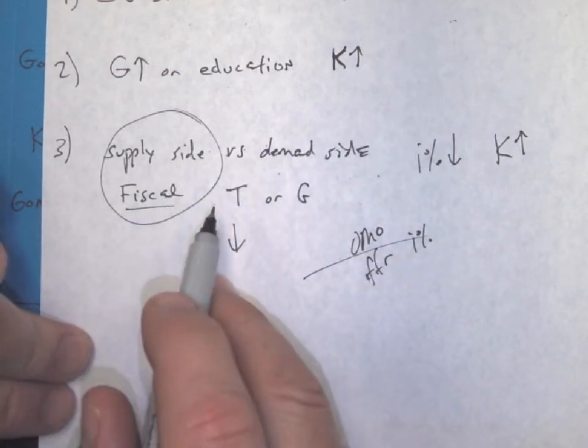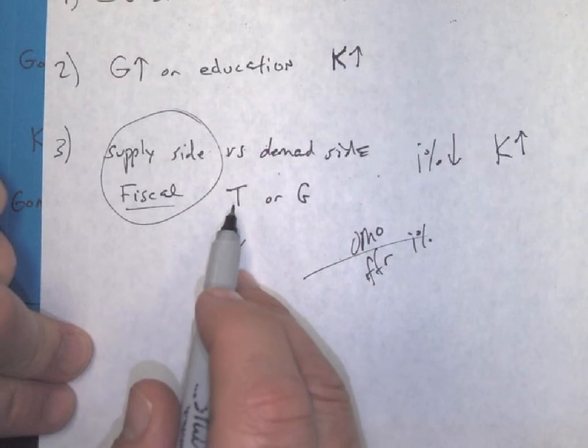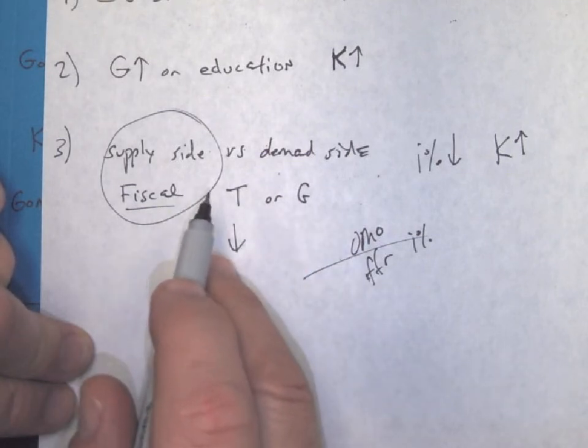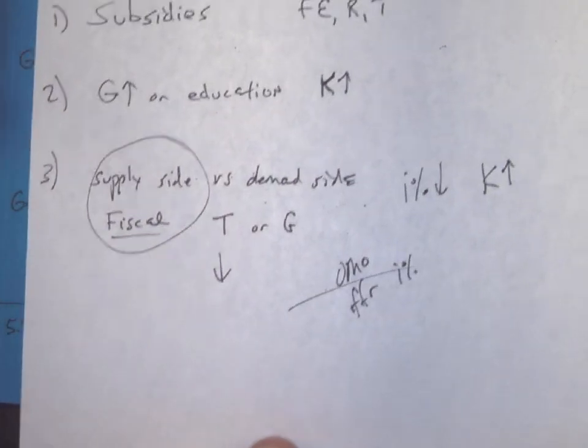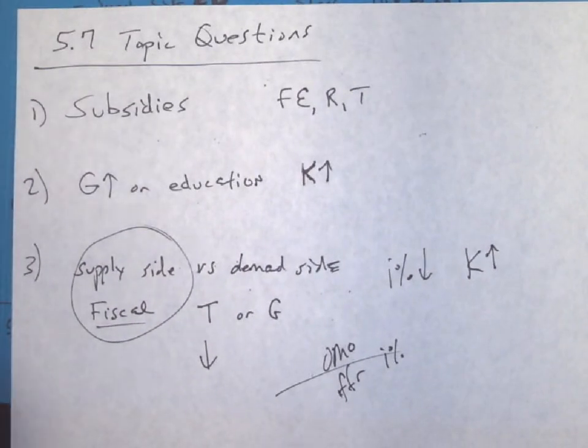This is going to be taxes or government spending. And if it's supply-side, that public policy is probably going to be lowering taxes or adding government spending to get subsidies or whatever into our supply-side to increase production. So when you're working your topic questions for 5.7, those are some clues, tips, and tricks.